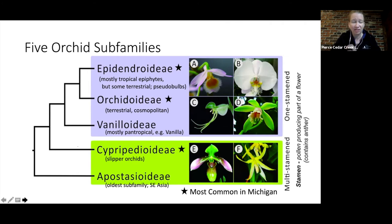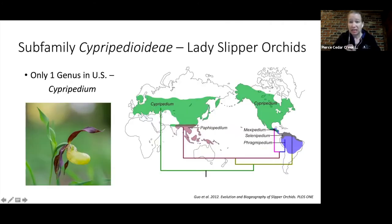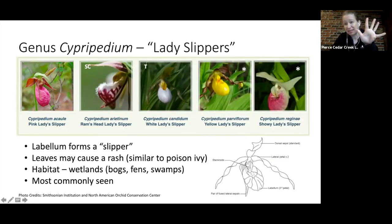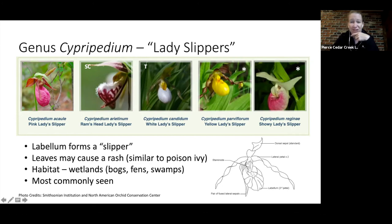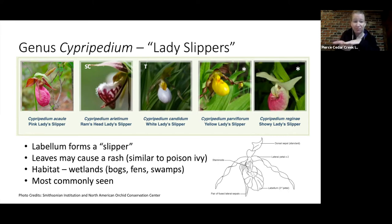The first subfamily we'll discuss is the lady slippers. In the US we have one genus with five species: pink lady slipper, ram's head lady slipper, white lady slipper, yellow lady slipper, and showy lady slipper. The white lady slipper is threatened and the ram's head is of special concern. When looking at lady slippers, look for that slipper or moccasin shape in the lower lip. They're mainly found in wetlands — bogs, fens, and swamps.